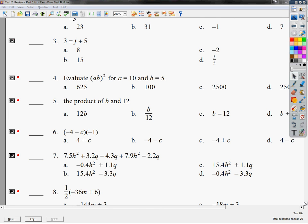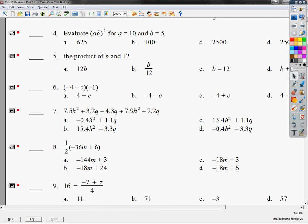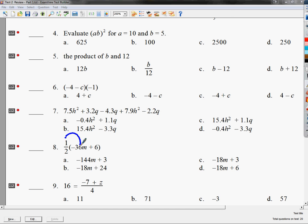This is a distributive property question. It's not a difficult one at all. It just looks weird. If you can remember that one half times negative 36, that's the first part because it's multiply, and you'll end up with negative 18M. Then you'll do one half times six, which if you type it in will give you plus three. And I look for the answer, and I see that it is C.